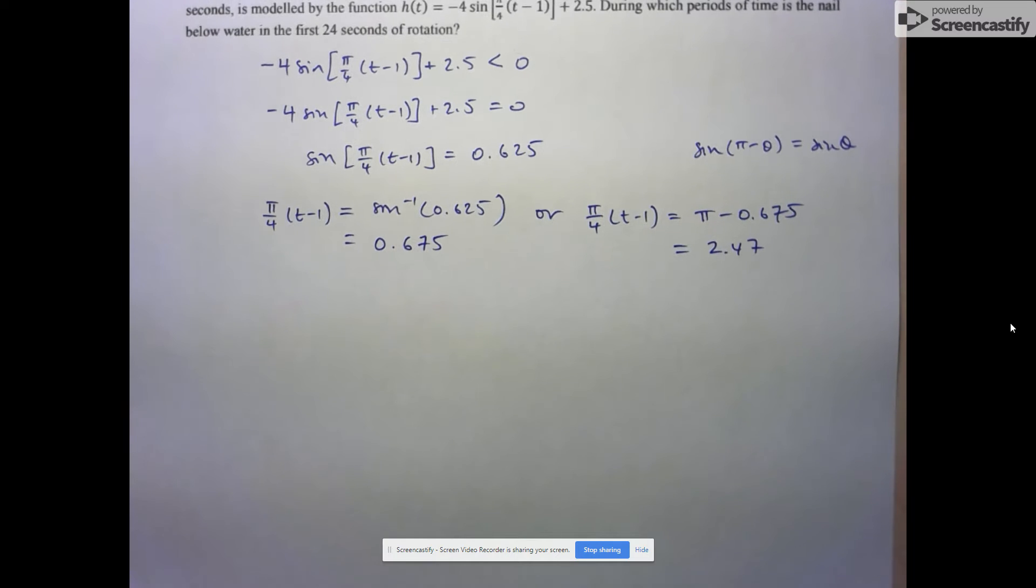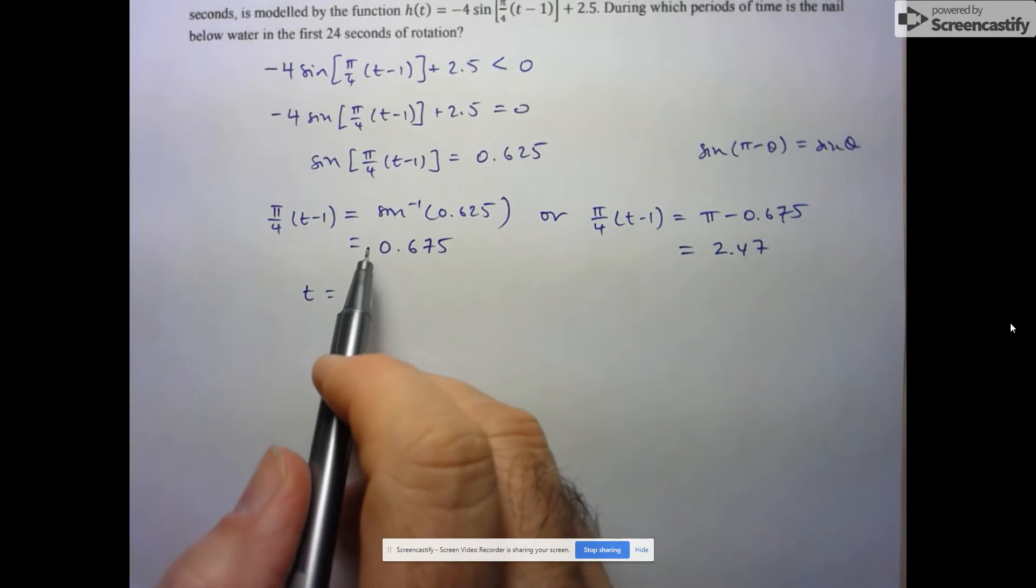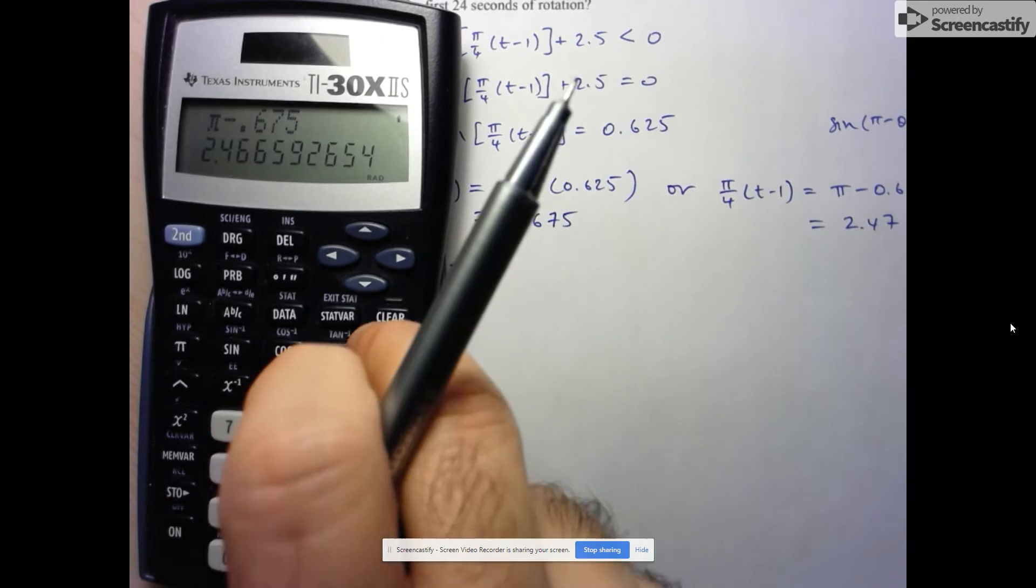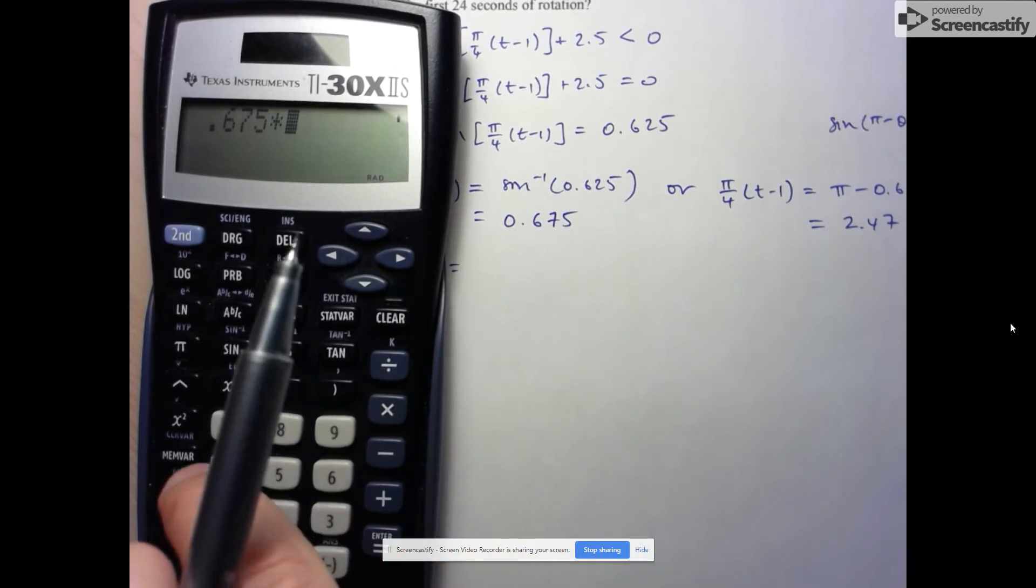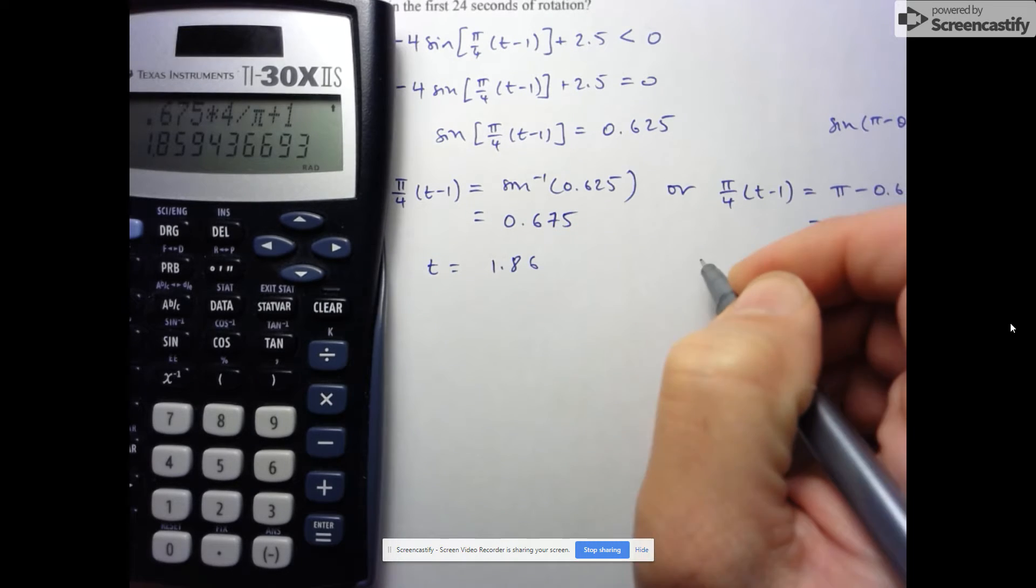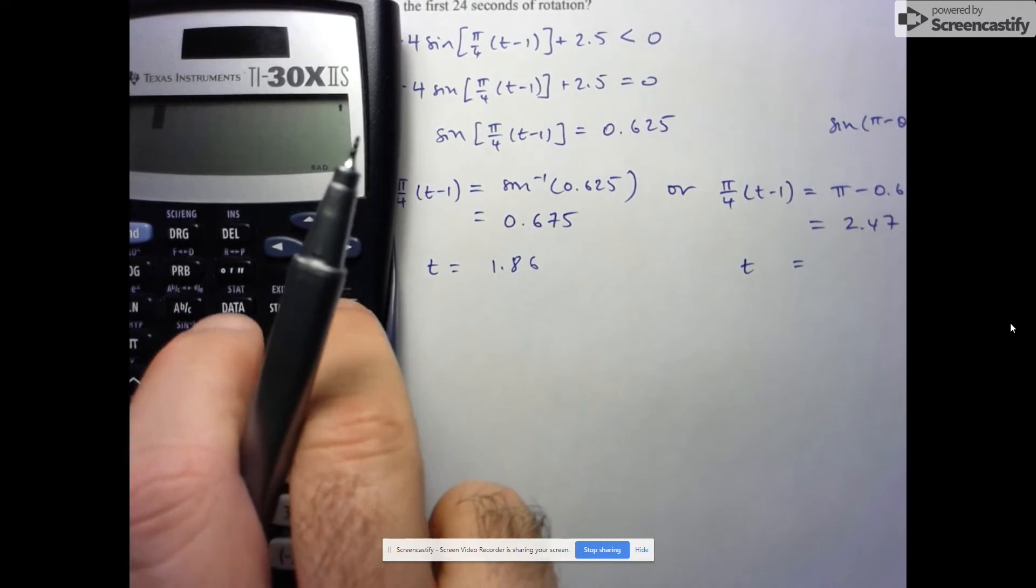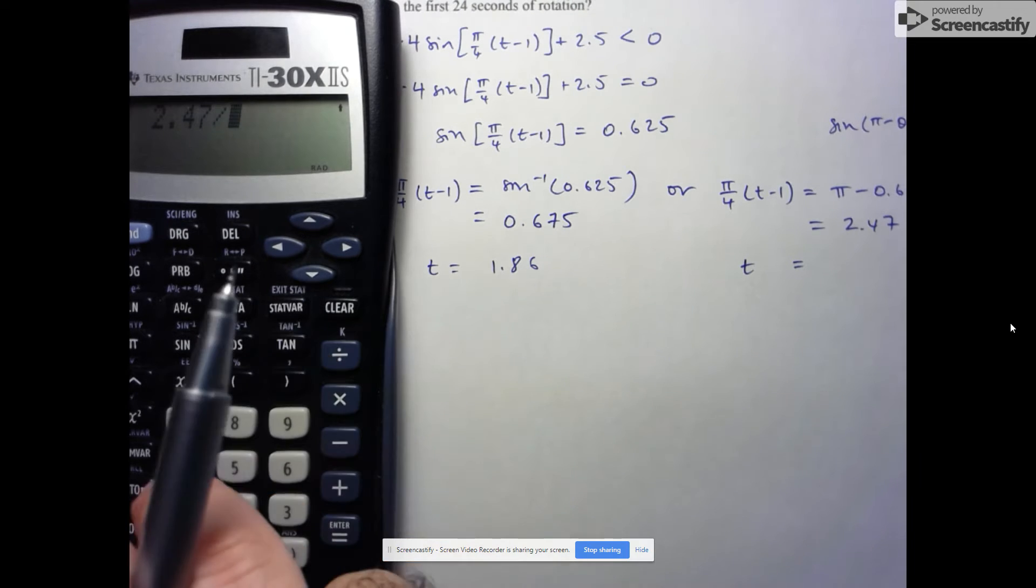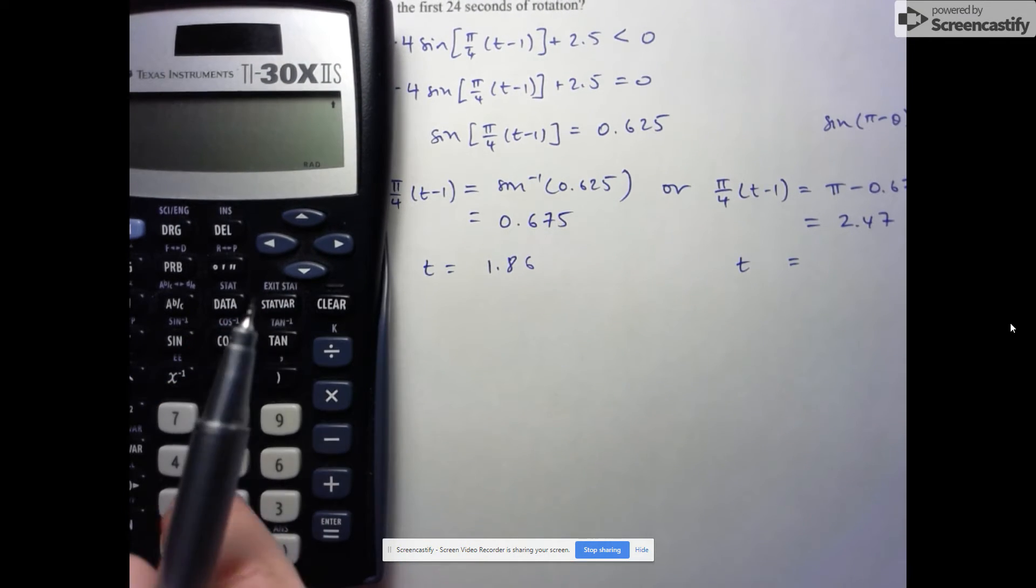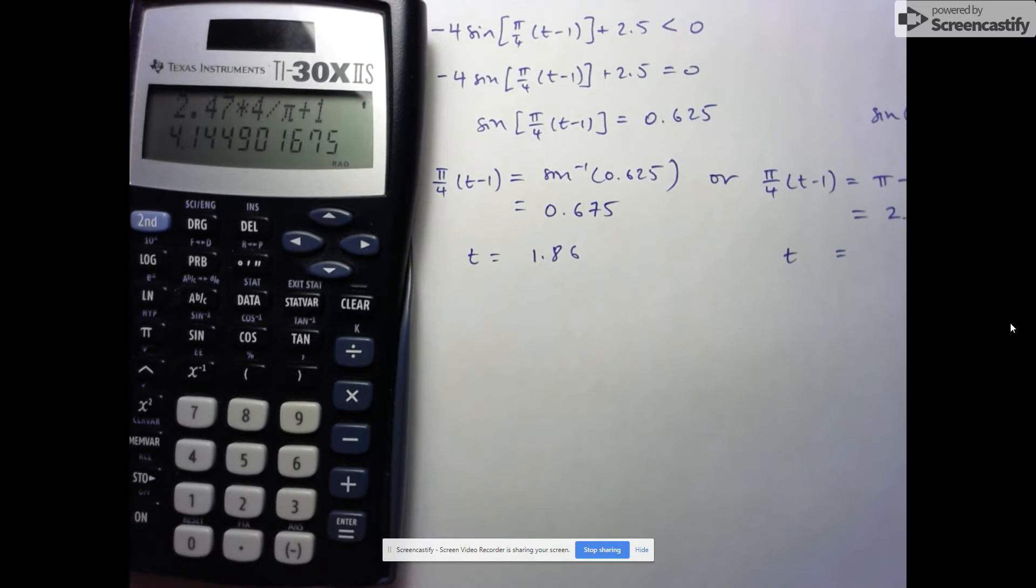So let's now continue on to step three. Let's solve for t in each of these situations. I have to multiply by 4, divide by pi, and then add 1. So 0.675 times 4 divided by pi, then plus 1, and we end up with 1.86. And for the second one, 2.47 times 4 divided by pi, and then plus 1 gives us 4.14.